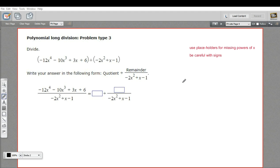I'm going to go ahead and set this up. So we're dividing by 2x squared plus x minus 1. And here we have negative 12x to the fourth minus 10x cubed. And here we have our missing power. There's no x squared term. So I'm just going to put in plus 0x squared. That's what I mean by a placeholder. And then plus 3x and plus 6. Okay. Now we're ready to go.